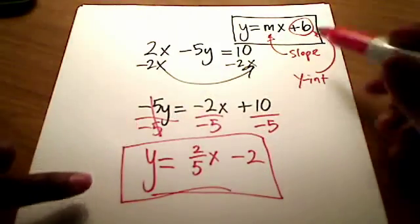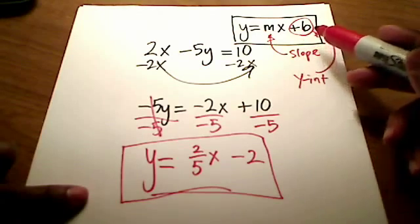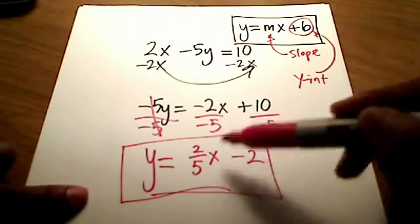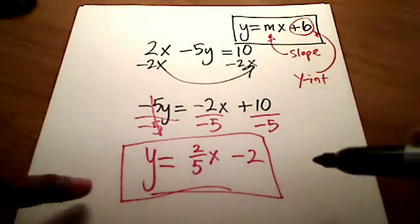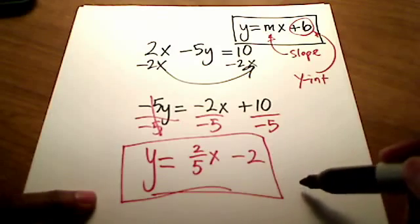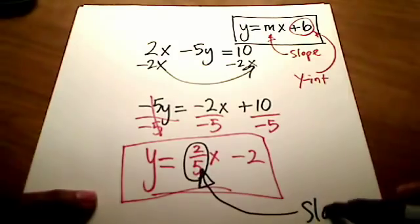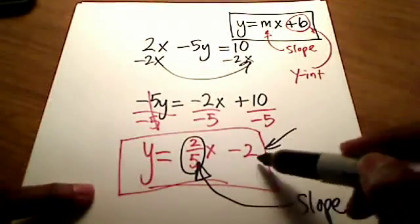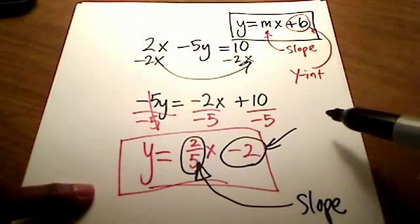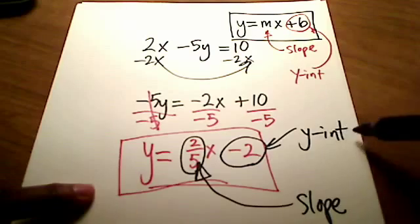So now this equation looks like what I was after, this slope intercept form. And I've got all the players that I need. I hope you see, if you see it in this form, that this coefficient of x, this thing in front of the x, is my slope. This guy here is my slope, 2 fifths. And this negative 2 sitting here all by itself at the very end of my equation is what we call a y-intercept.